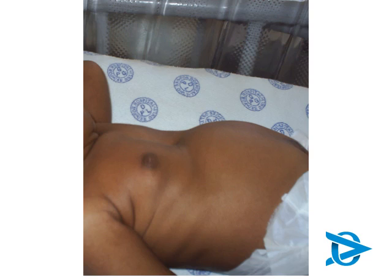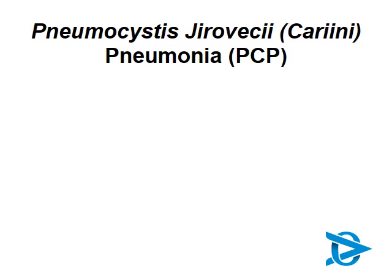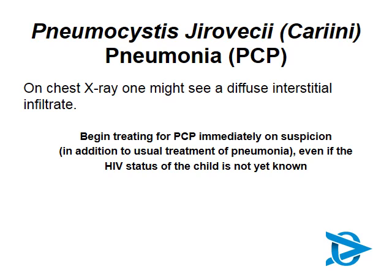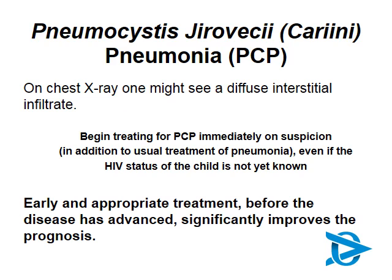To help make the diagnosis, an X-ray may or may not be helpful. If you're lucky you might see a diffuse interstitial infiltrate; normally the X-ray is helpful because it excludes bronchopneumonia, lobar pneumonia, or TB. PCP has a high mortality and it is very important to start treating immediately when suspected — even without an HIV status confirmed and even while starting standard pneumonia treatment. Early and appropriate treatment significantly improves prognosis. We have to catch them early.